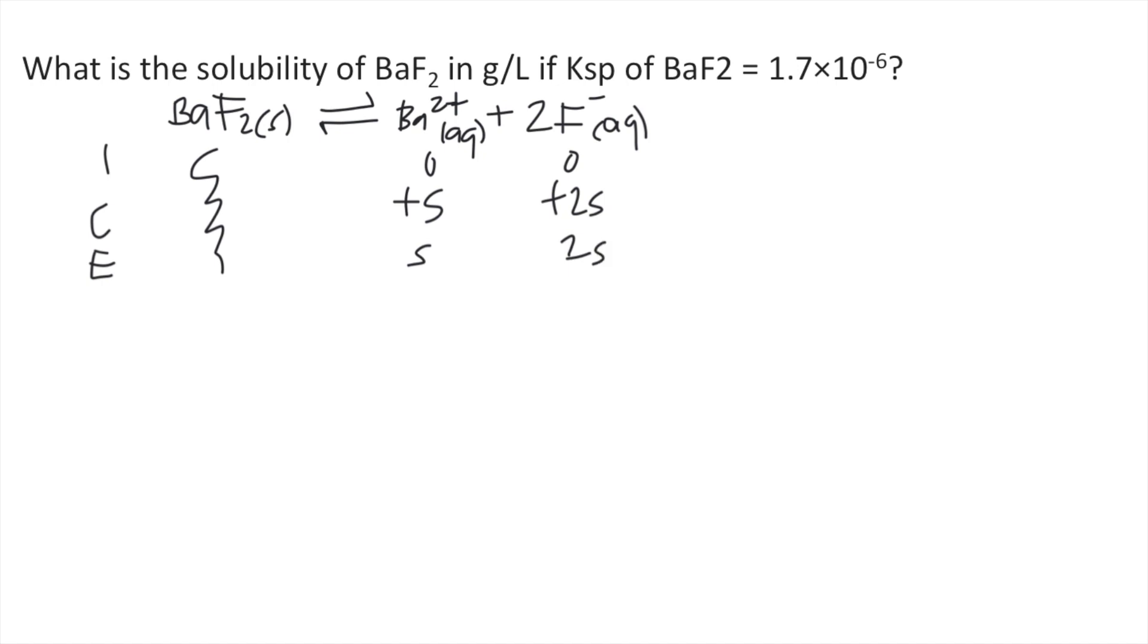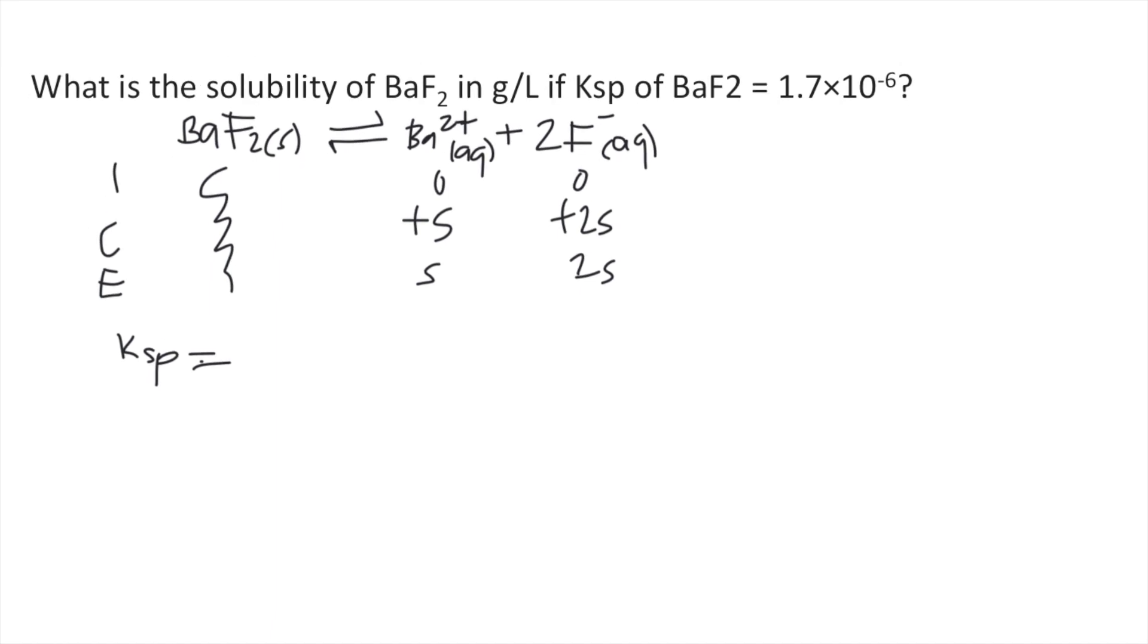After doing your ICE table, you need to write the Ksp expression. We know that Ksp is products divided by reactants. So our products, we have the concentration of Ba²⁺, times the concentration of F⁻. Don't forget to square it because there are 2F⁻, divided by the reactant. Since the reactant is a solid, we don't include it in our Ksp expression.